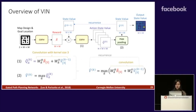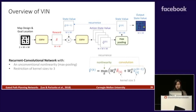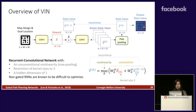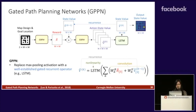Next, let's combine these two equations into one line. This way, we can view the VIN as a recurrent convolutional network, but with an unconventional nonlinearity which is max pooling, a restriction of kernel sizes to 3, and a hidden dimension of 1. Non-gated RNNs like this are known to be difficult to optimize due to effects like vanishing and exploding gradients. We propose to replace the max pooling activation with a well-established gated recurrent operator such as the LSTM, and we also allow kernel sizes greater than 3. We call this resulting architecture gated path planning networks.